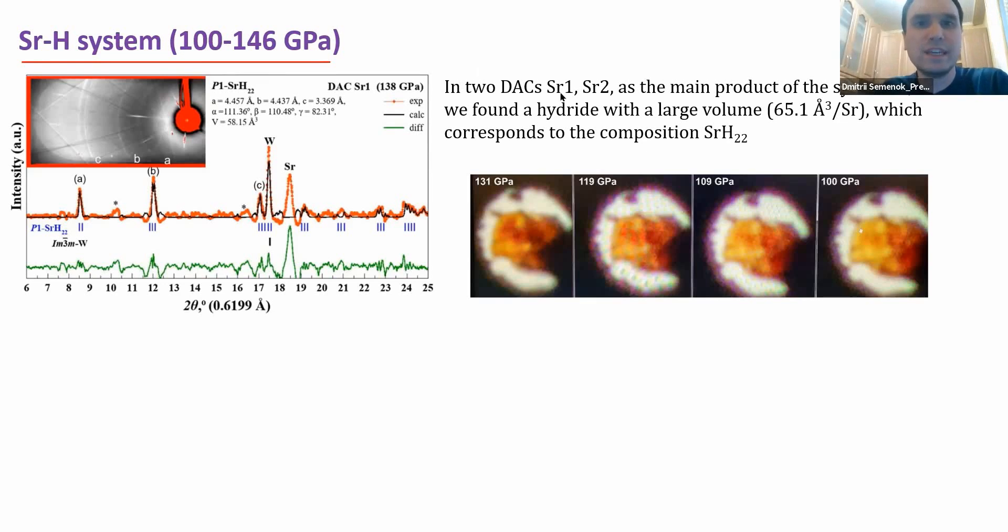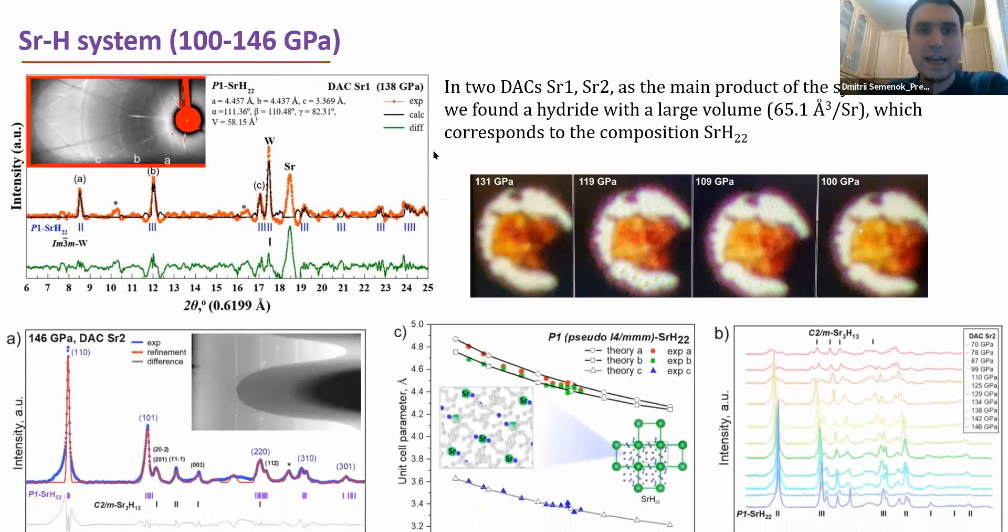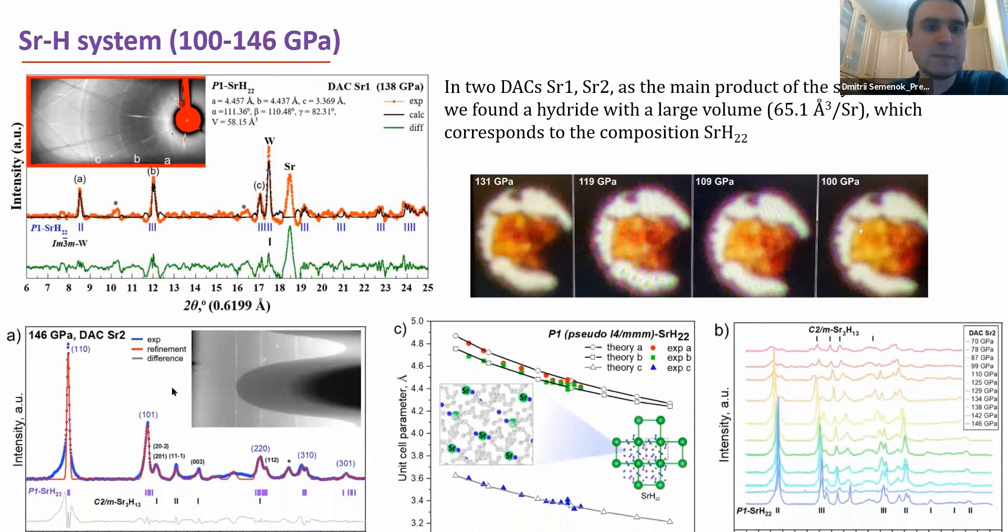This diffraction pattern was immediately investigated and indexed as strontium H22, because at that time we already predicted this compound theoretically. This strontium H22 has a tetragonal sublattice, so these peaks can be indexed in a tetragonal space group, tetragonal system. This synthesis and absolutely the same diffraction pattern was obtained in a different cell where we used strontium dihydride as starting material. We see the same set of diffraction peaks and also we obtained as a small impurity another strontium hydride, strontium H13 with hydrogen content a little bit higher than 4. You can see quite good agreement between the theoretically predicted unit cell parameters and its dependence on pressure. The theory is the black lines here for A, B and C parameters for this tetragonal structure with tetragonal strontium sublattice and experimental points are colored squares, triangles and circles.